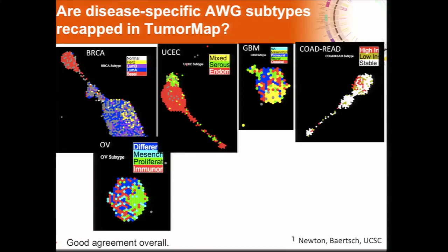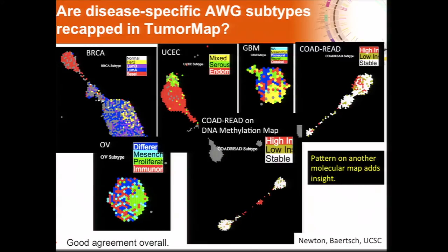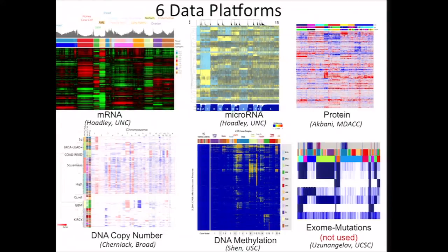There are the endometrial subtypes on the mRNA layout, GBM, and the colorectal subtypes. You can consult other maps — in this case the methylation map — and see that the colorectal subtypes actually dial out better here, which corresponds to the high MSI and stable tumors. That makes sense because we know that's correlated with methylation status. The working group took six different platforms — originally five, but we were asked by a referee to also incorporate mutations — and we each generated subtypes from these separate platforms on their own and then set out to do analyses on them.